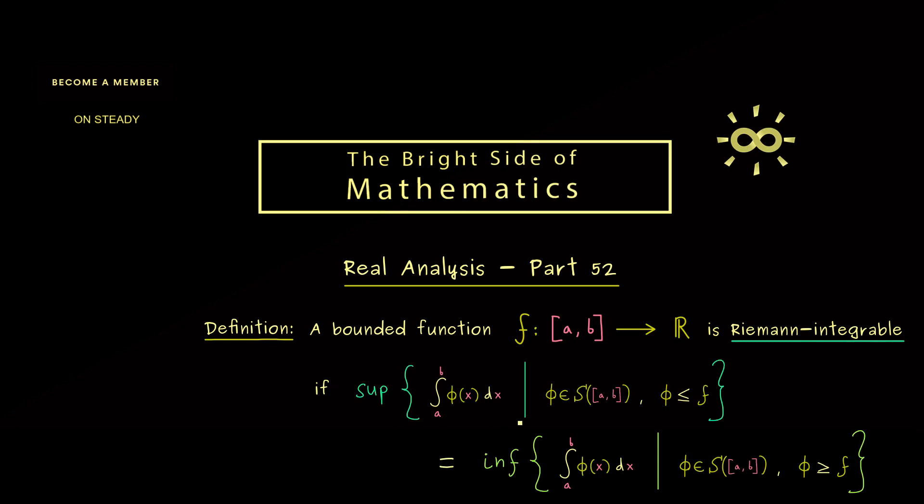And we call this function Riemann integrable if the upper and the lower integral are the same. There the lower integral is given when we approximate the integral with step functions from below. And the upper integral is given when we approximate the integral by step functions from above.